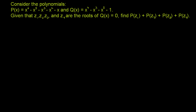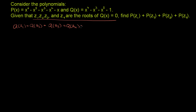A good place to start: if z1, z2, z3, z4 are the roots of Q(x) equals 0, that means Q(z1) equals Q(z2) equals Q(z3) equals Q(z4) equals 0 — they're the roots, they're solutions to this equation. Given that, and we want to evaluate P(z1) plus P(z2) and so on, it seems useful to express P(x) in terms of Q(x), because then the parts that are Q(zi) will evaluate to 0.